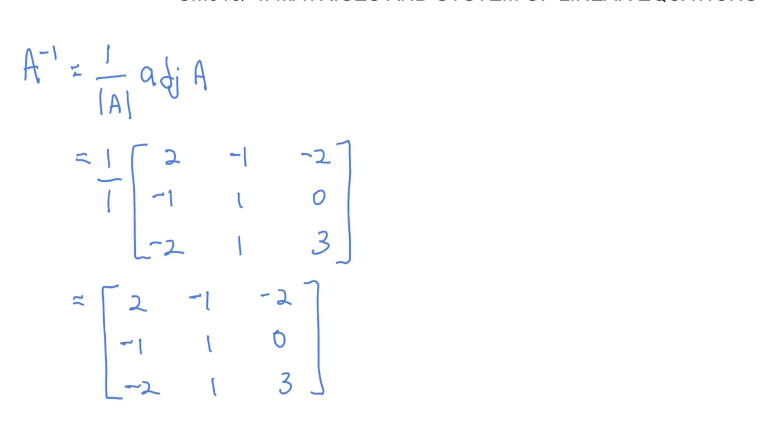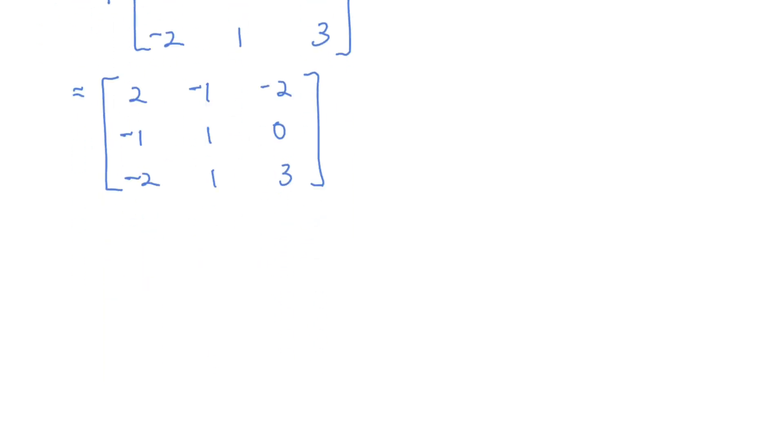Now since the question didn't ask for A inverse, the question asked for x, y, z. You need to continue your solution with, as you know, X is equal to A inverse B. So A inverse, two, negative one, negative two, negative one, one, zero, and negative two, one, and three times it with B.